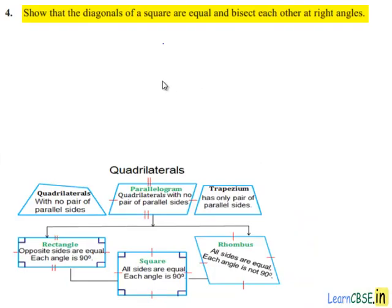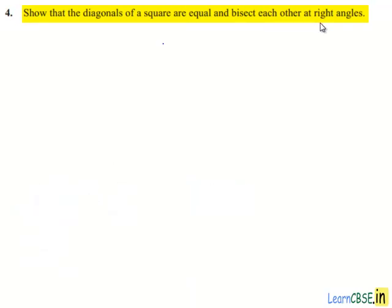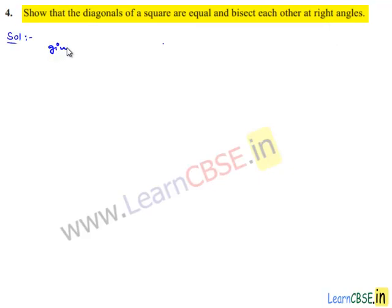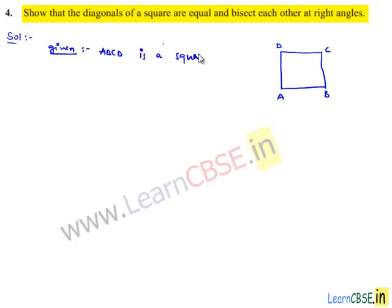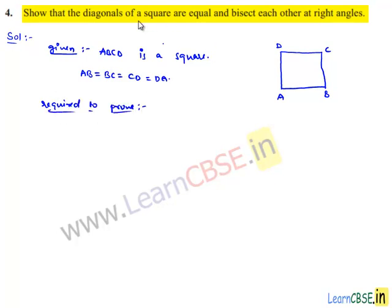Moving on to the fourth question: show that diagonals of a square are equal and bisect each other at right angles. Now moving on to a solution, let us note the given information — we are given a square. Let us assume a square ABCD. As ABCD is a square, we can say that all sides are equal. So AB is equal to BC is equal to CD is equal to DA. We are required to prove that diagonals of the square are equal and bisect each other at right angles.